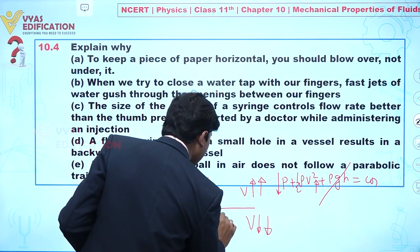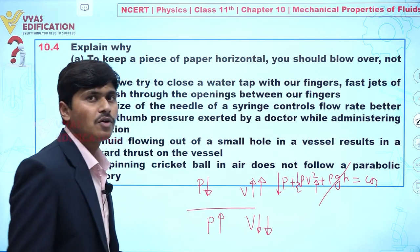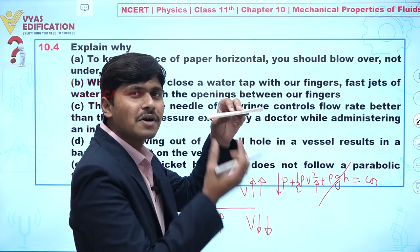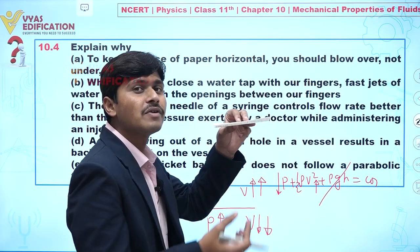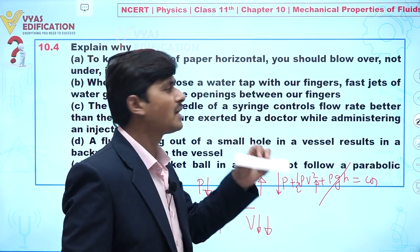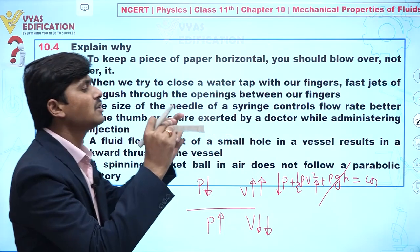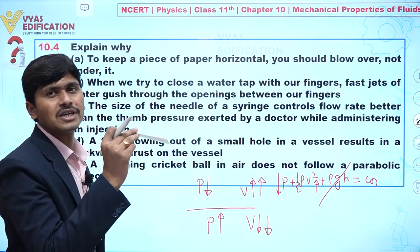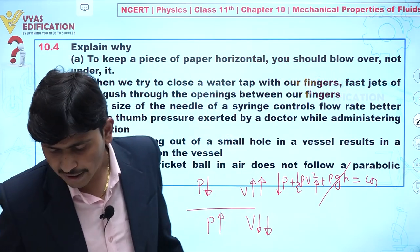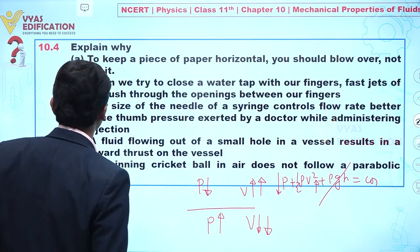At the same time, pressure is increasing at the bottom. So the pressure exerted from the bottom will be more compared to the pressure exerted at the top. Due to this pressure difference, the paper can be held horizontally. This completes the explanation for part (a).